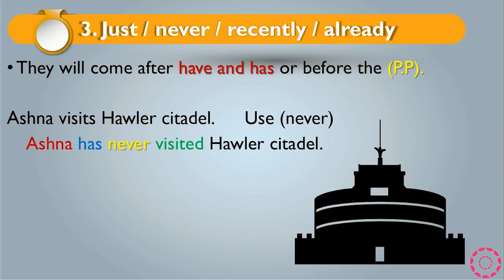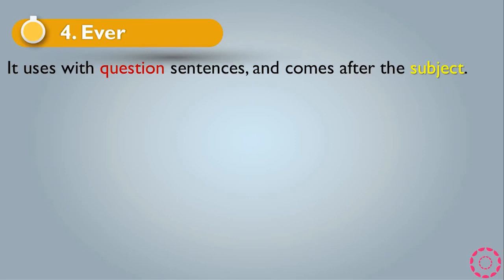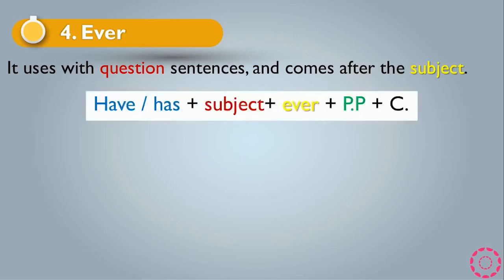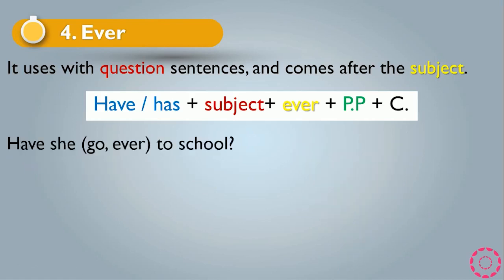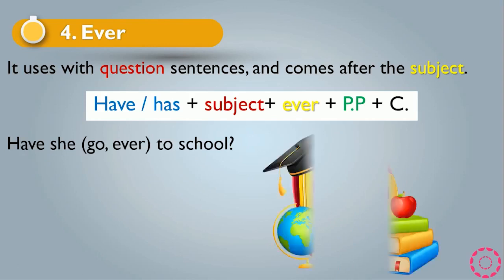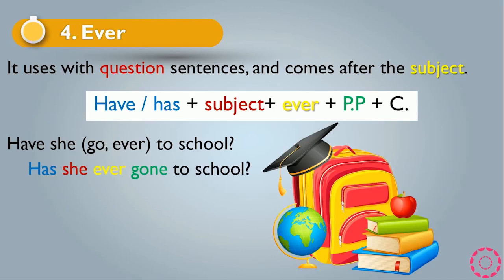The fourth word is ever. It is used with question sentences and comes after the subject. The rule is: have or has at the beginning plus subject plus ever plus past participle plus complement plus question mark. Example: 'You ever eat shark' becomes 'Have you ever eaten shark?' Have is at the beginning, you is the subject, ever comes after the subject, eaten is the past participle, and there is a question mark. Another example: 'Have she go ever to school' becomes 'Has she ever gone to school?'